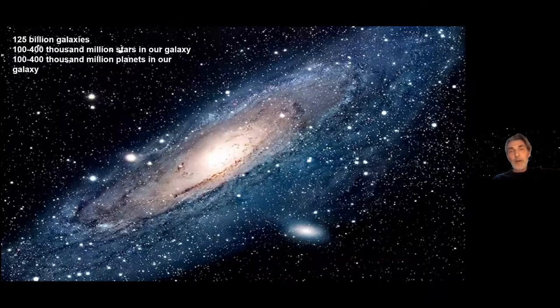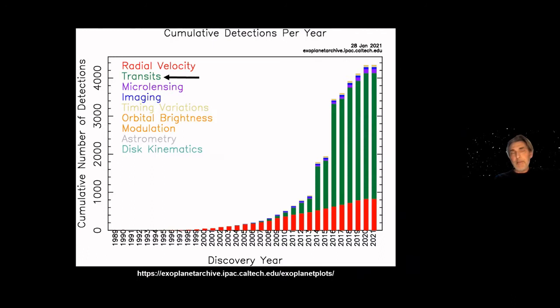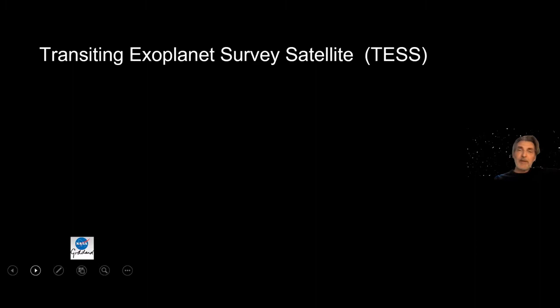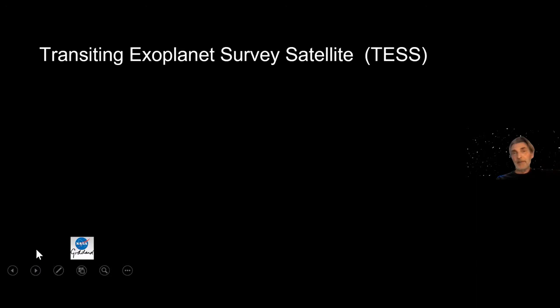In recent years there has been an enormous upsurge in the collection of data about so-called exoplanets — planets that are moving around stars other than the Sun. All these stars are far away, so it's hard to see them through a telescope. As you can see from this picture showing the number of detected exoplanets over the past years, the green parts of these bars reflect the detection of these planets by means of the so-called transit method, which I will explain next.